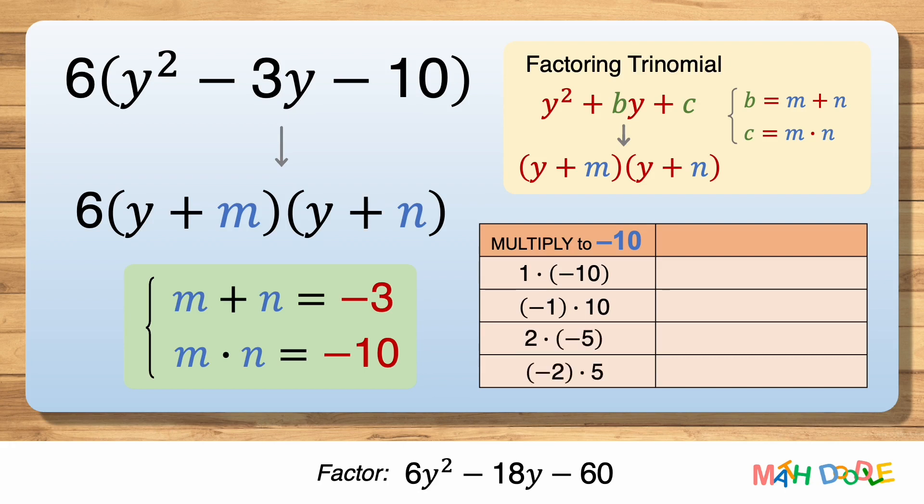Now let's see which of these combinations adds to -3. 1 plus -10 is -9, so 1 and -10 do not add to -3. -1 plus 10 is 9, so -1 and 10 do not add to -3. -2 plus 5 is 3, so -2 and 5 do not add to -3.